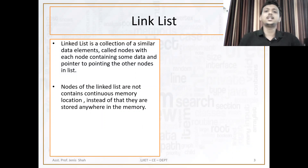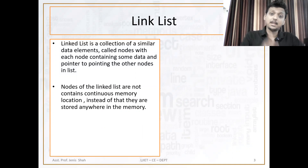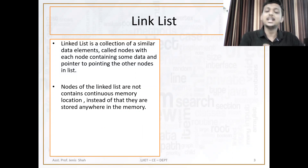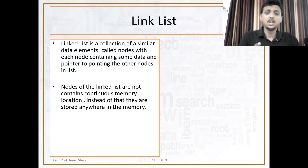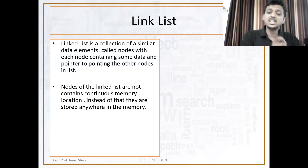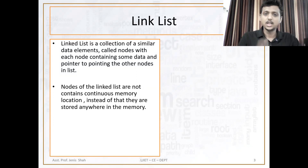Nodes of the linked list are not continuous in memory. We have already studied about the array. Suppose in an array, the first element address is 1000. If it is an integer type array, then the next element is at 1002, next is 1004, next is 1006. So each and every element contains the same or similar difference between memory addresses. In an array, the memory addresses are in continuous form.